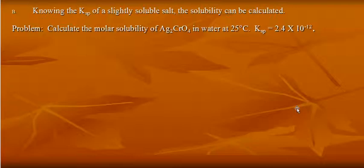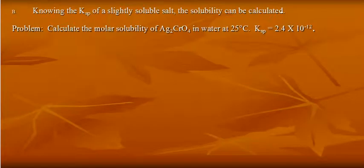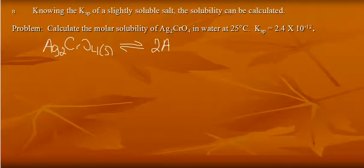If I know the Ksp, I can calculate the solubility. Let's look at this example. We have silver chromate as the insoluble solid. So we're going to write an equation. So we're going to start off with my solid. In equilibrium with its ions, there are two silver ions and one chromate ion.